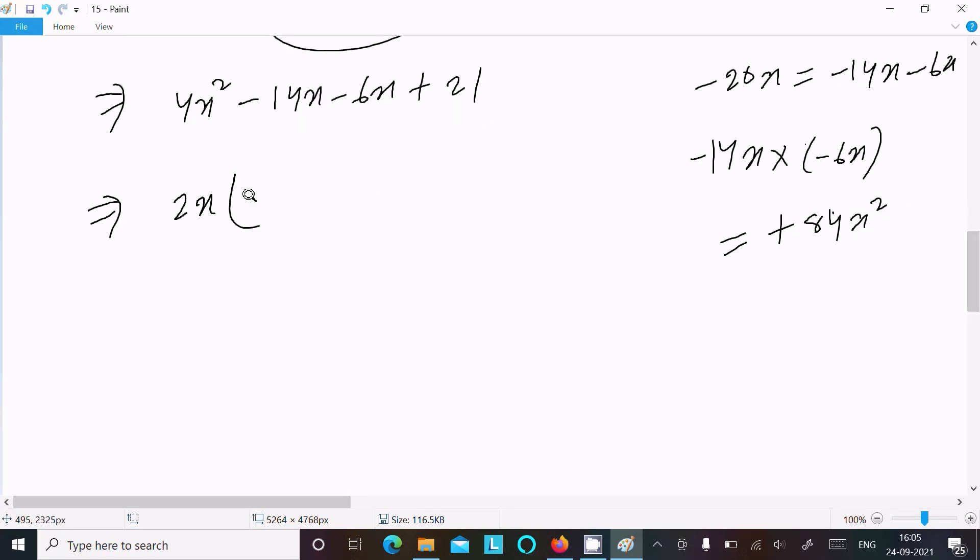So take the common: 2x here, 2x this here -7. And if I take the common -3, then 2x, this here -7.